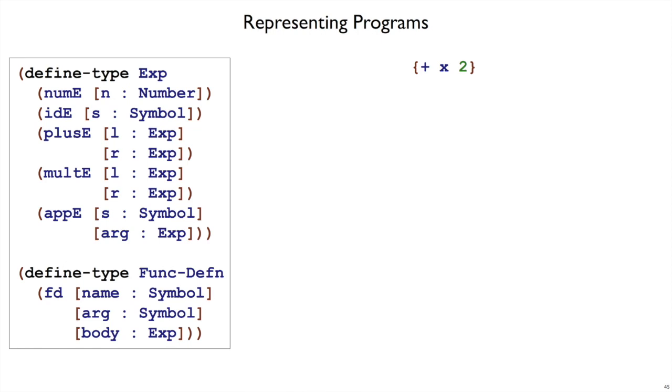If we have plus x two, then we still have a plus expression, it's just that the first sub-expression is an identifier x. So we'll represent that with plus e, ide, quote x, and nume two. We can't just say ide x, we need to put the quote mark there, because we have to make sure to get a symbol. If we left off the quote mark, that would be an x reference at the plait level, and we didn't define a plait variable called x. So that's how we represent identifier expressions inside of a plus expression.